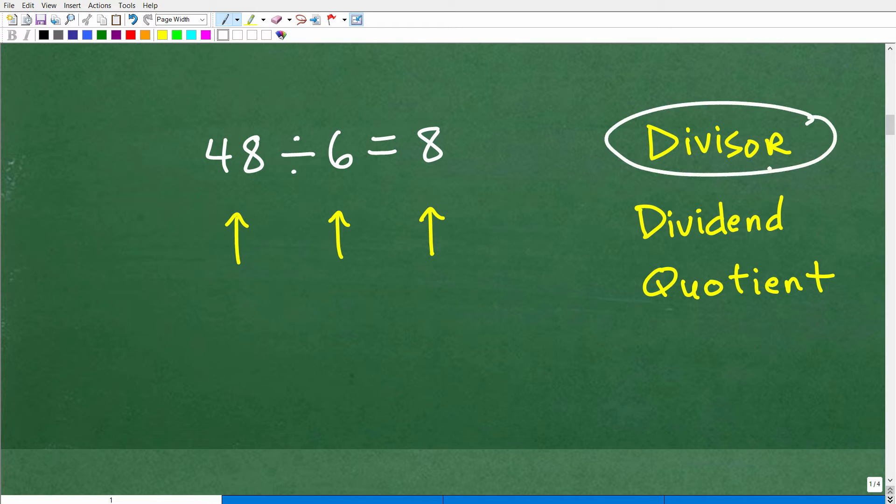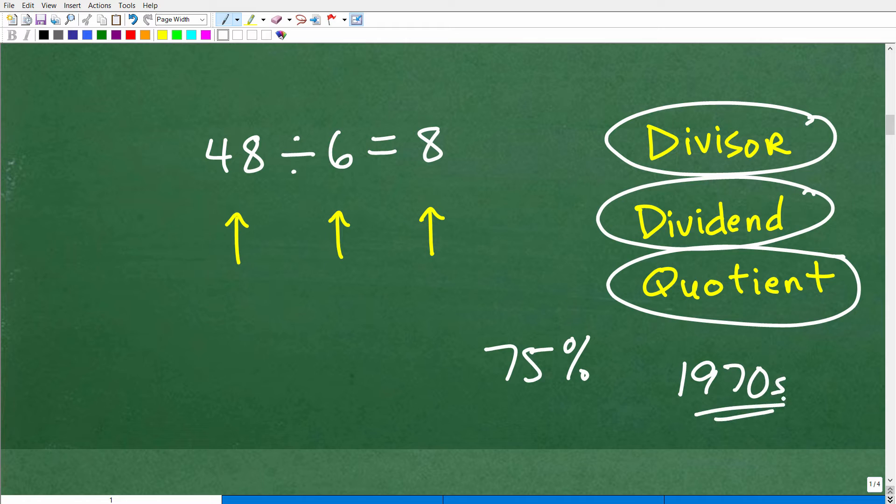So here's the words you need to be thinking about. We have divisor, dividend, and quotient. And I would say maybe 75% of you are like, oh yeah, I remember these words. I remember learning these words. For me, it was elementary school way back in the 1970s.